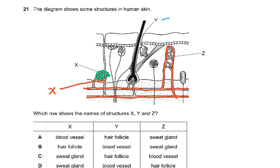There is a blood supply to the sweat gland, as every organ of the body has a blood supply, except the cornea and the lens which do not have a blood supply. So X is the sweat gland, Y is the hair follicle, and Z is the blood vessel — that is why the answer is C.